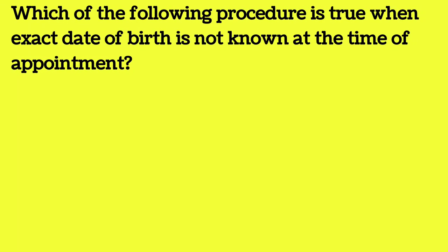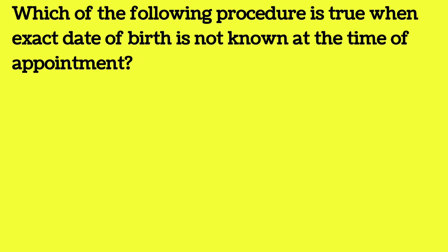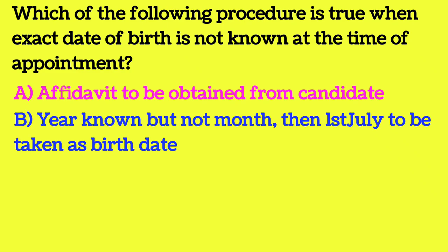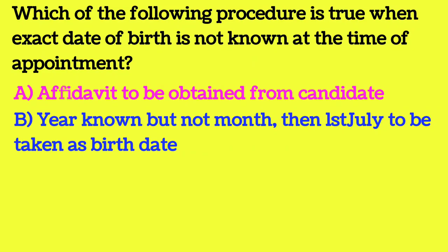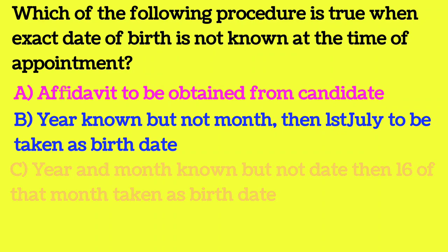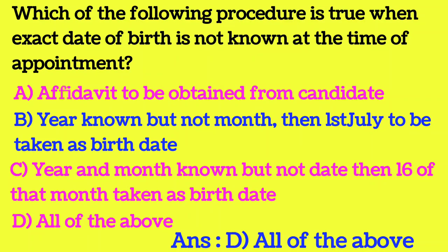Which of the following procedure is true when the exact date of birth is not known at the time of appointment? Option A: affidavit to be obtained from the candidate. Option B: year known but not month — then 1st July to be taken as birth date. Option C: year and month known but not date — then 16th of that month is taken as birth date. Option D: all of the above. The answer is all of the above.